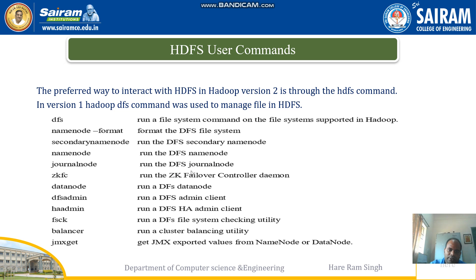Journal node: runs the DFS journal node. zkFS: runs the ZK failover controller daemon. Data node: runs a DFS data node. DFS admin: runs a DFS admin client. HA admin: runs a DFS high availability admin client. FSCK: runs a DFS file system checking utility. Balancer: runs a cluster balancing utility. JMX gate: gets the JMX quoted values from name node or data node.